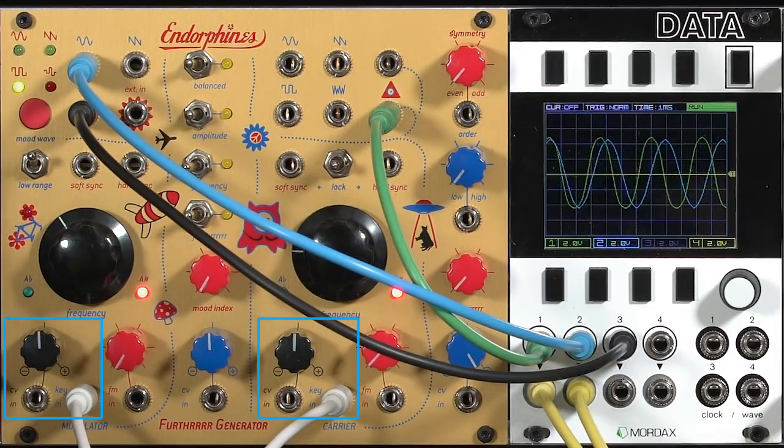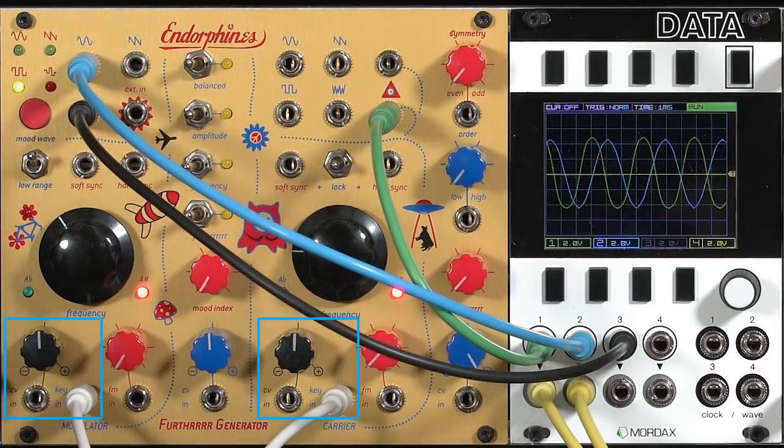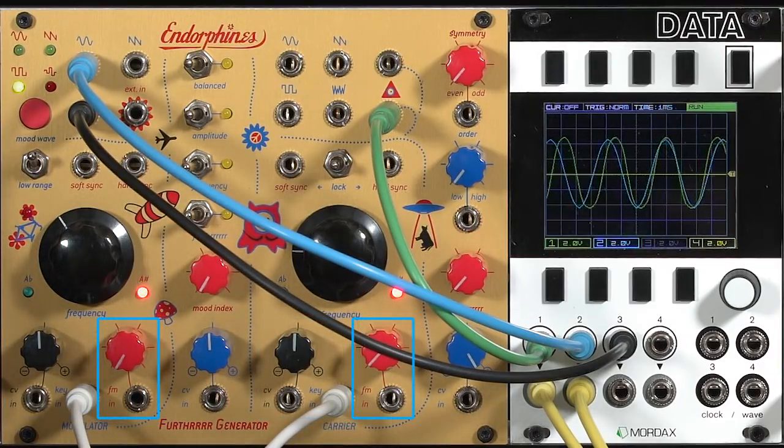The exponential frequency modulation has an attenuverter, and this is good for connecting external LFOs to do vibrato effects, and also a normal attenuator on the linear input.